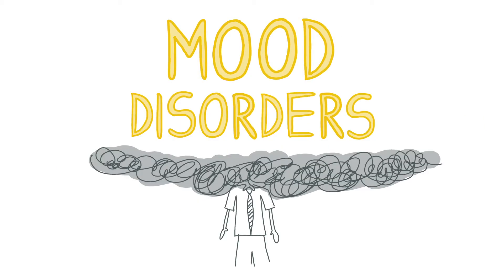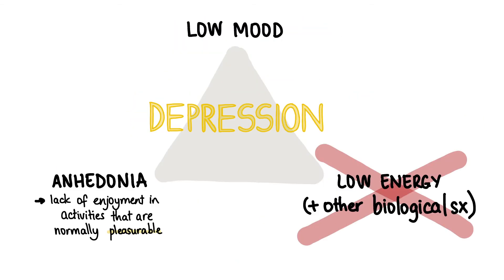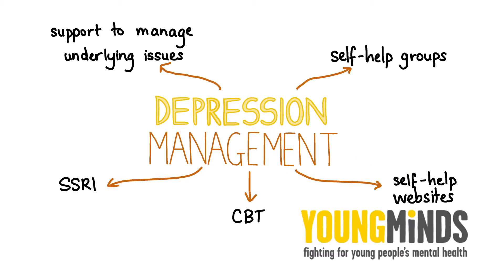Now let's move on to mood disorders. Depression can occur in children and it is characterized by low mood and anhedonia. The low mood is persistent but not always pervasive in children. Also, low energy and other biological symptoms are not reliable symptoms for depression in children. Depression is treated by managing underlying problems, signposting to self-help groups and websites, CBT, and if necessary the first line pharmacological treatment is fluoxetine, which is an SSRI.